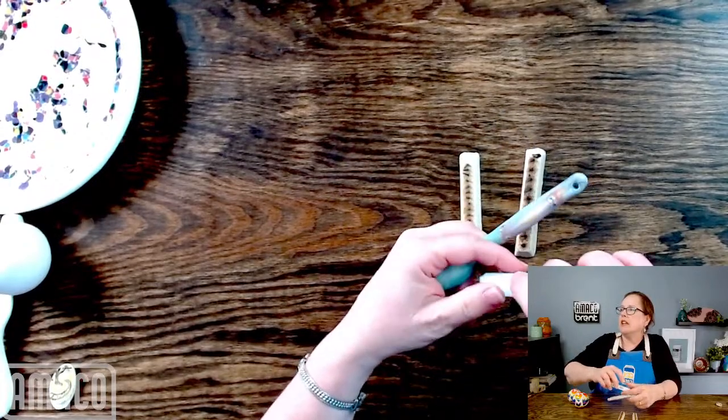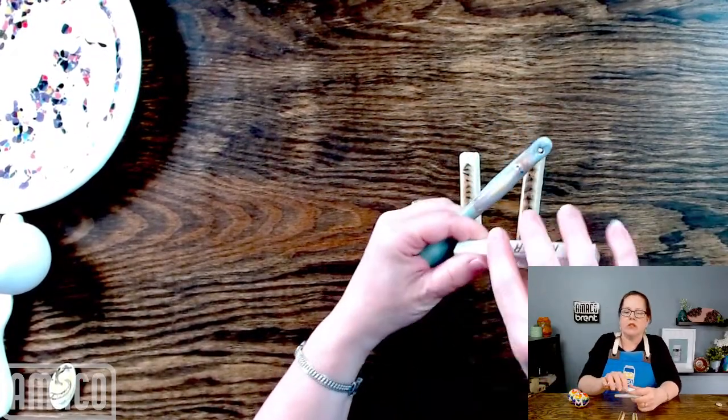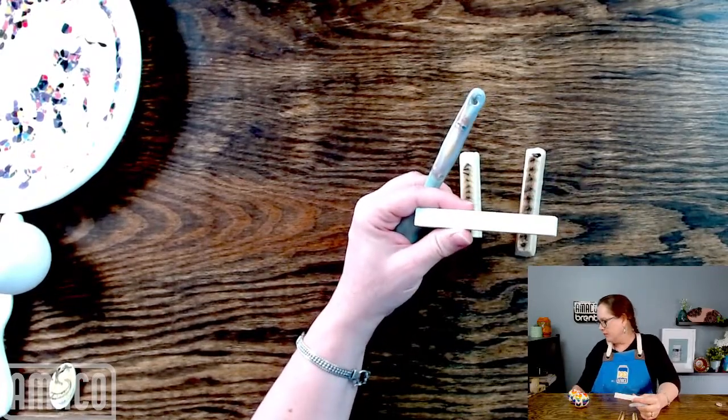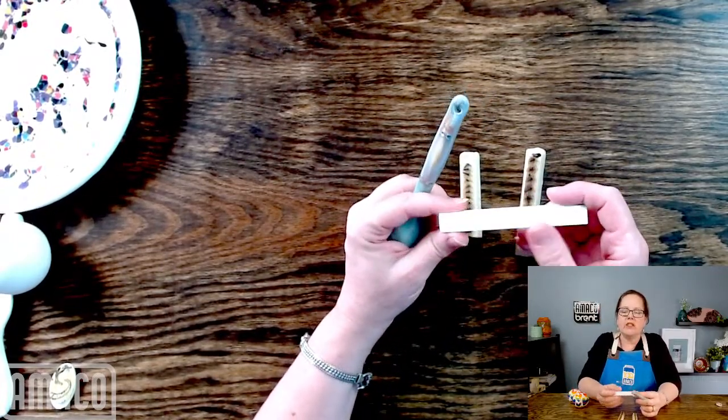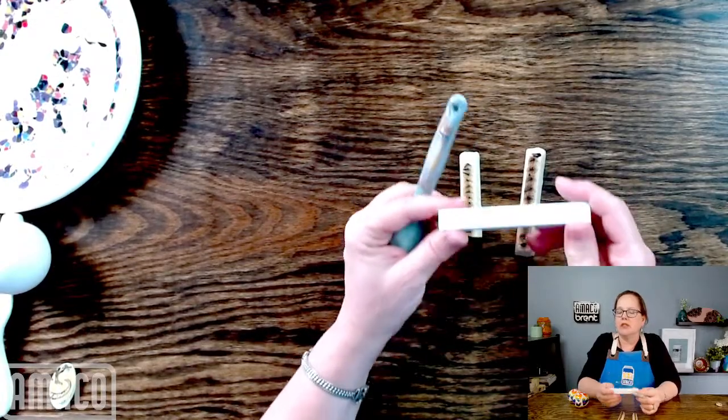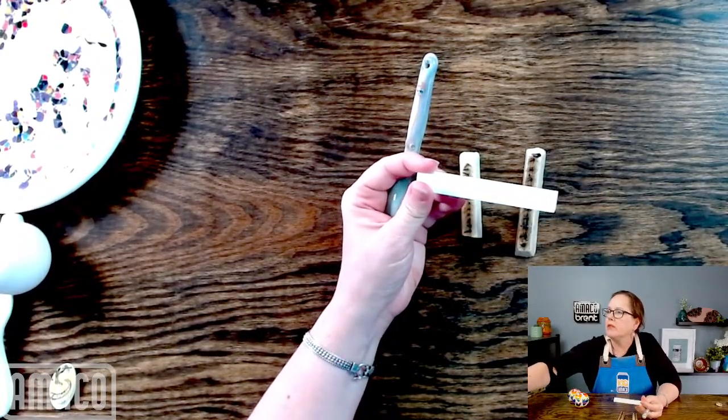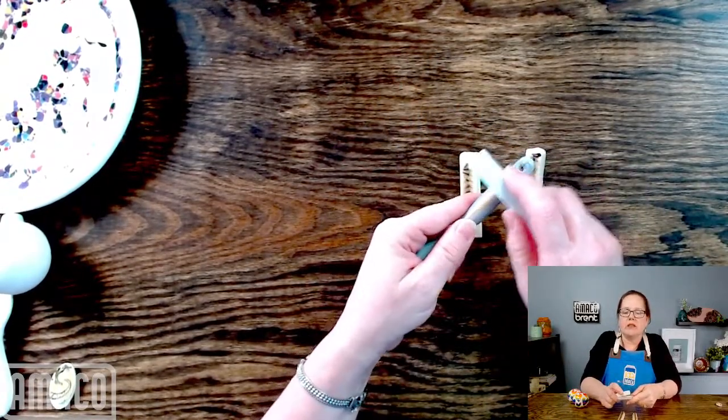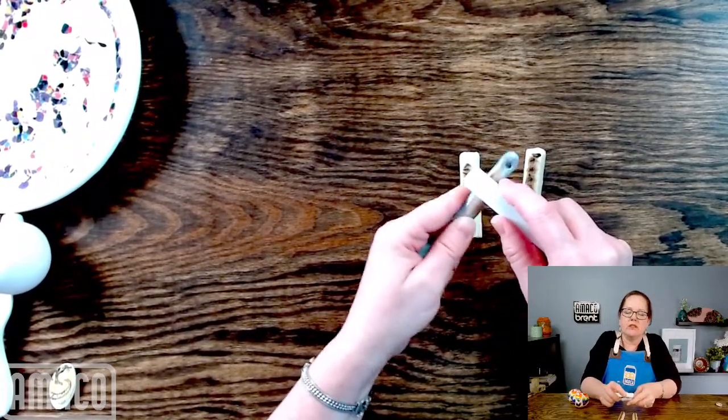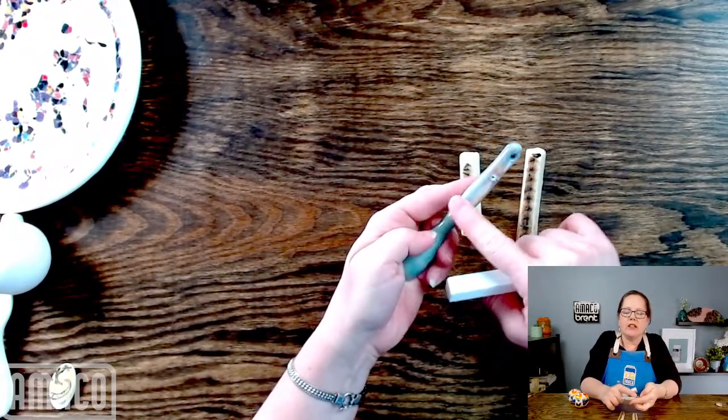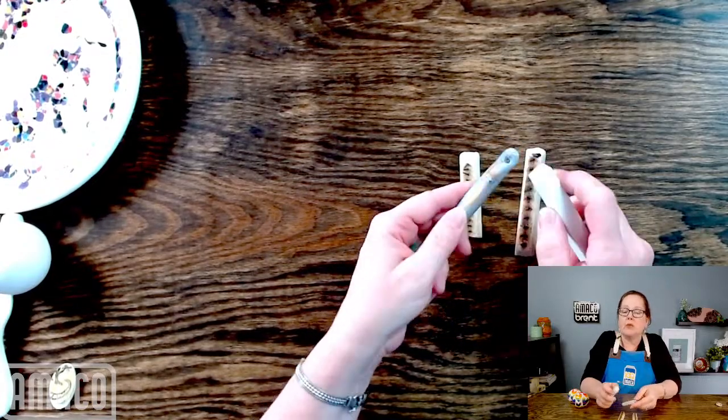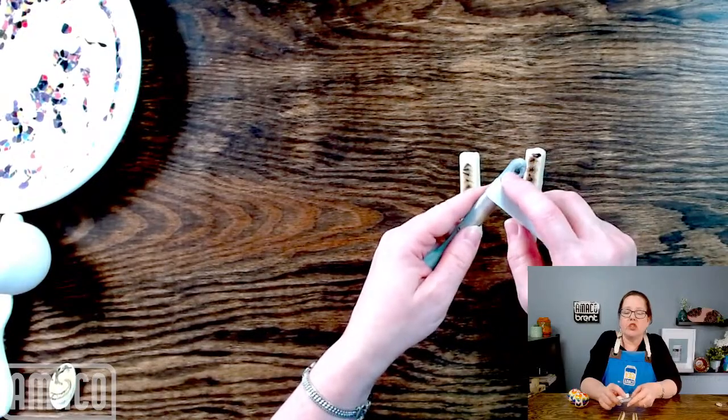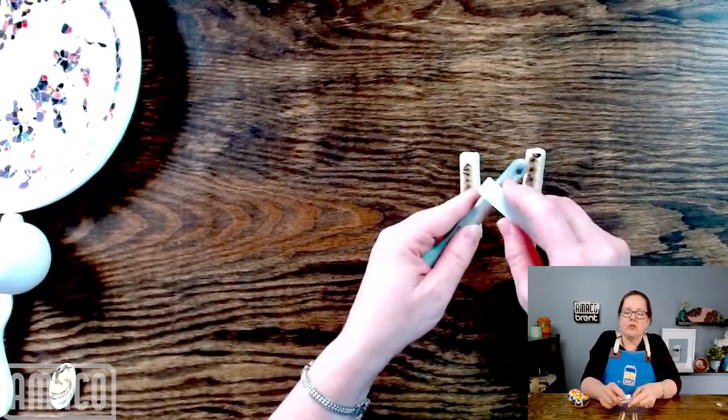Now, what I do to make sure that I'm not getting any marks is I use this. It is a tool made by Kemper, and it always looks to me like a piece of jicama. But it is like a sanding stick. It is a little brick of material. I have already sanded these off, and they make little lumps because the glaze ran a little bit, but at least they are not going to bite you. They are not sharp.